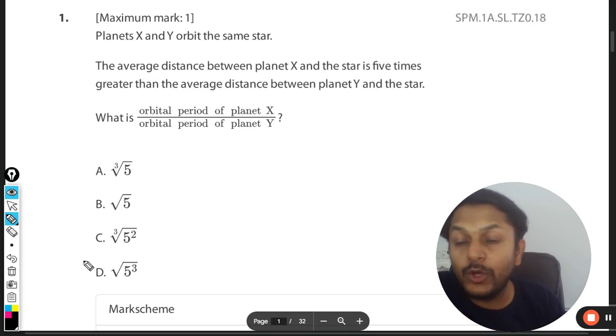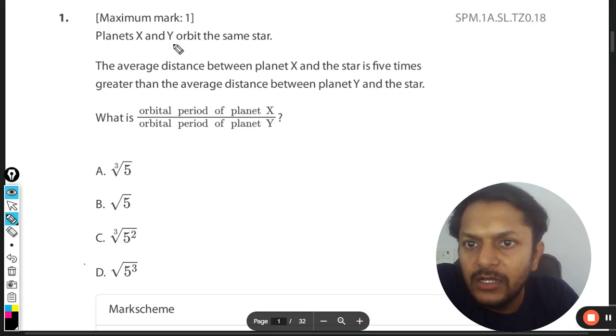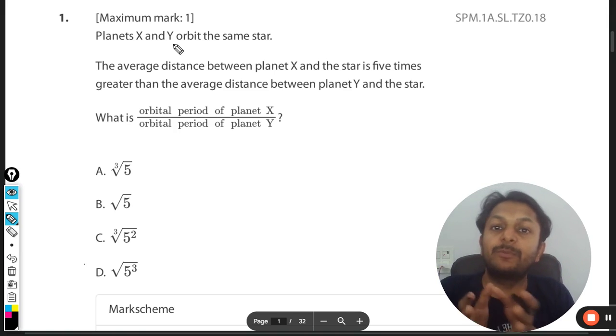Okay, let's see what is there in this question. Planets X and Y orbit the same star. The average distance between planet X and the star is five times greater than the average distance between planet Y and the star.